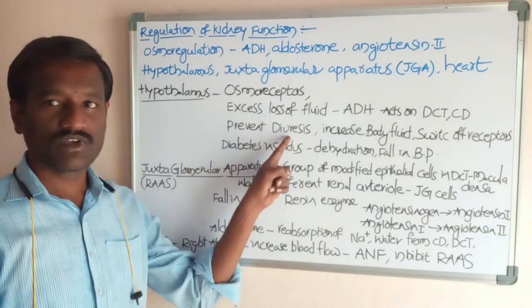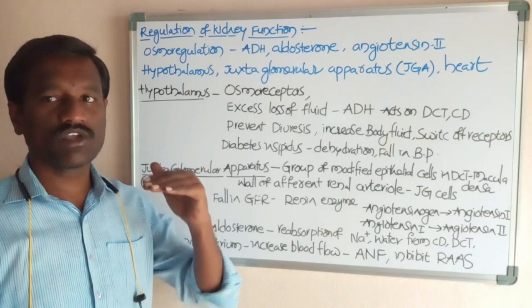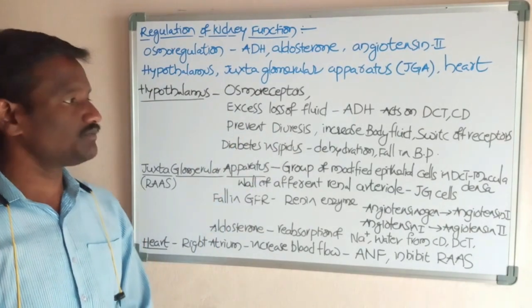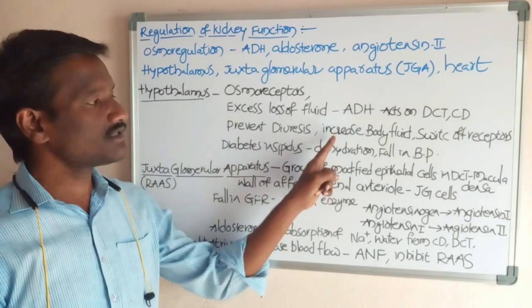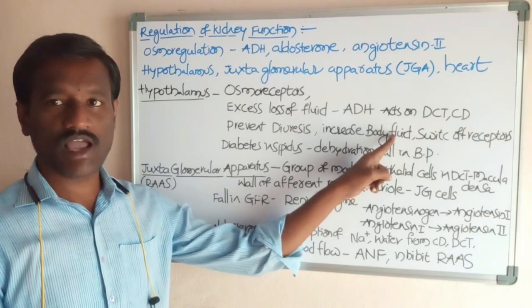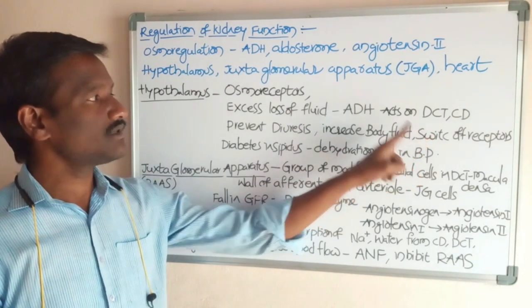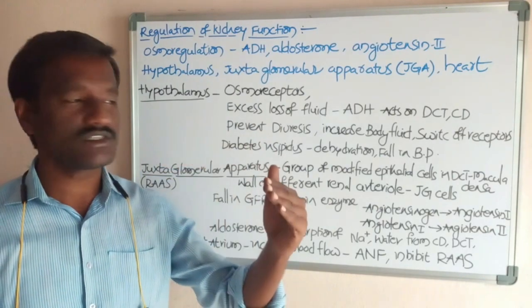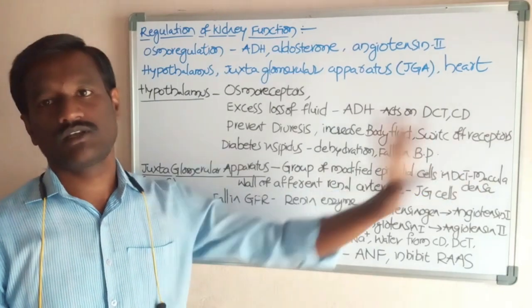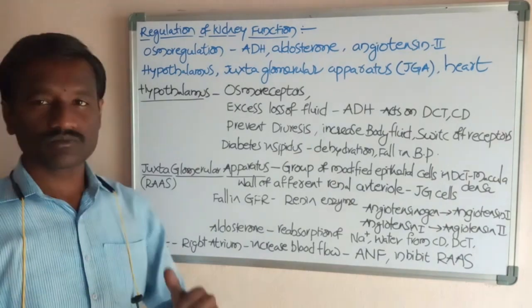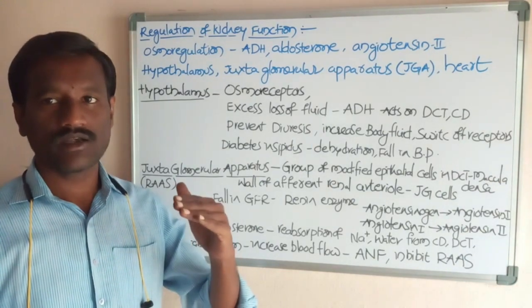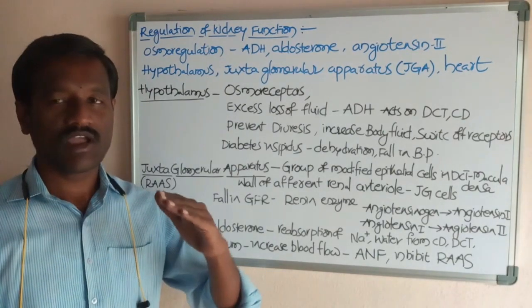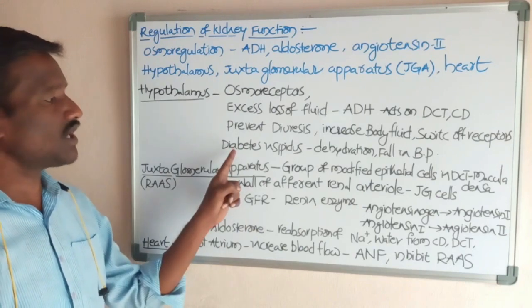Diuresis means excessive loss of water through the urine. ADH prevents diuresis and causes increasing of body fluids. When body fluids increase, it causes switching off of the osmoreceptors.